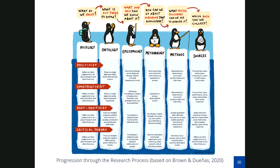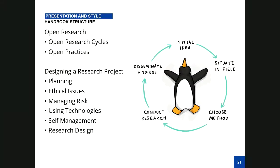There's another part of the handbook primarily written by the OER Hub team covering open research: what does an open research cycle look like, and what do open practices in research look like? A lot of that section draws on Martin Weller's book, The Digital Scholar. We also looked at the process of designing a research project — not just research design itself, but things people don't necessarily think about: planning, ethical issues, risk, what technologies you might need to use, and self-management and self-care as well, which are not things you'd typically find in a research methods guide.